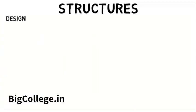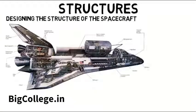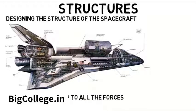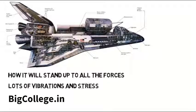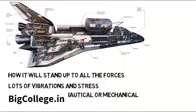Structure is about designing the structure of the spacecraft — how it is shaped and how it will stand up to all the forces it's subject to. Just when a rocket is launching, there are lots of vibrations and heavy stress that occur throughout the vehicle, so it's important that everything is designed properly to withstand that. This is also a subsystem that you could see an astronautical or mechanical engineer working on.